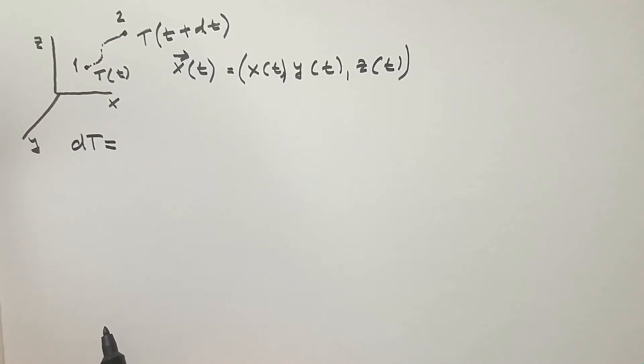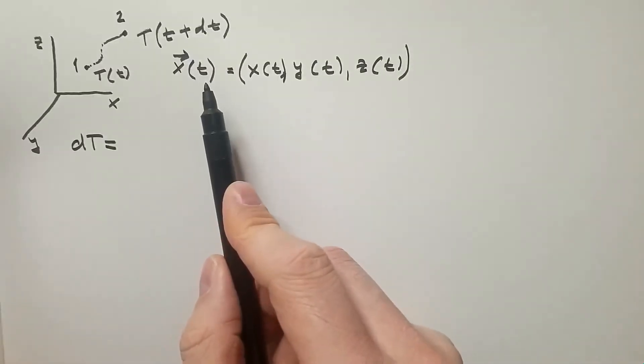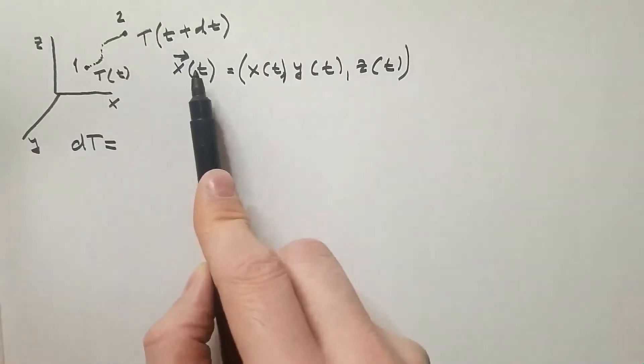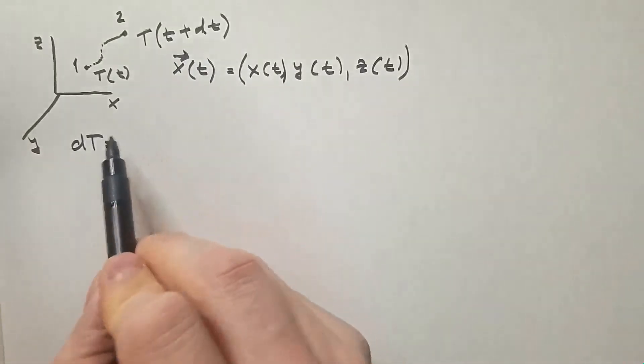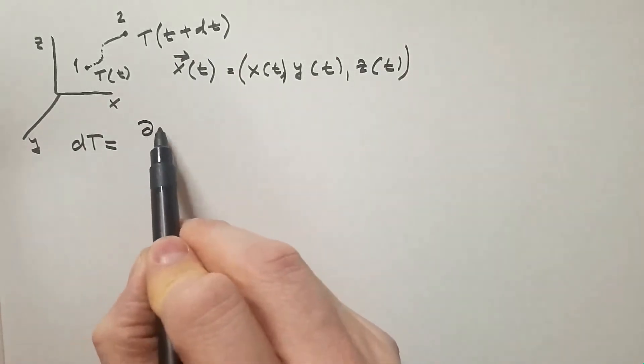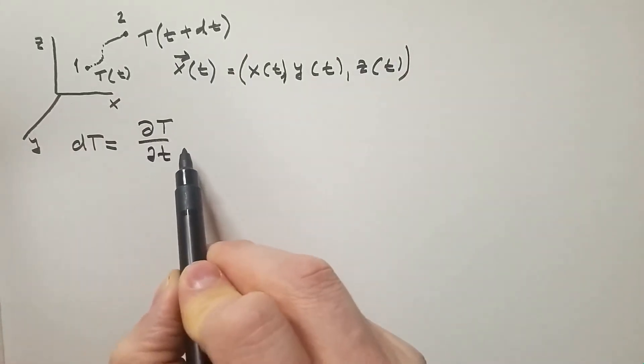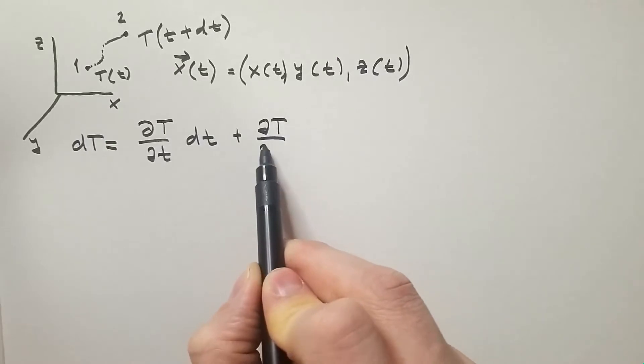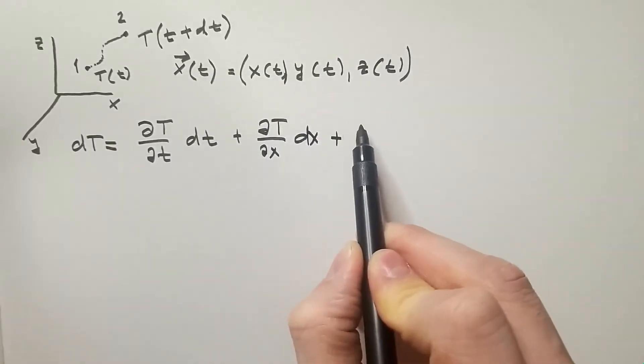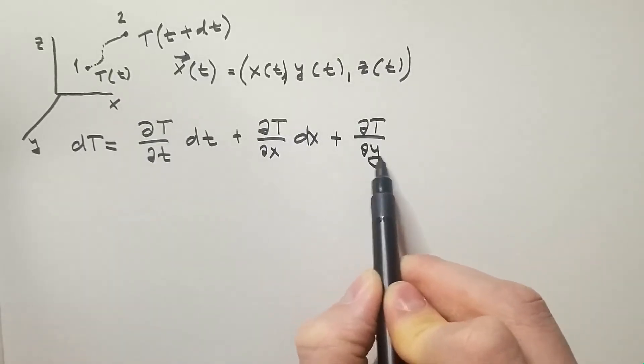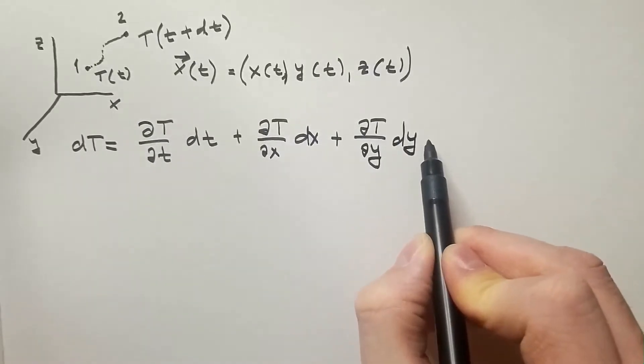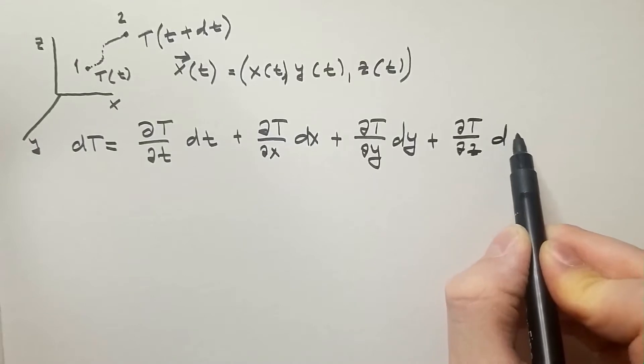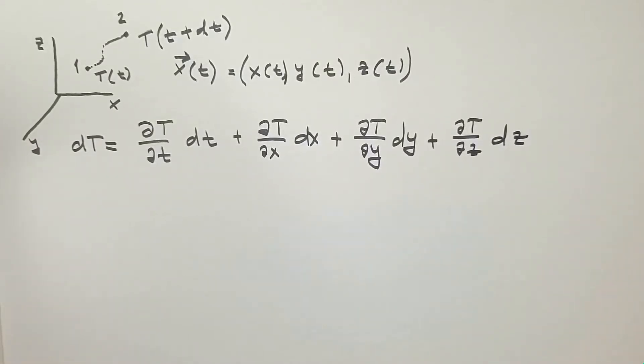dT will be equal, well, I need to do total derivative of this function and this function is function of time as well as space, but space is also a function of time. So, dT will be ∂T/∂t times dt plus ∂T/∂x times dx plus ∂T/∂y times dy and plus ∂T/∂z times dz.